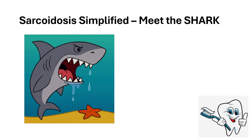Hello everyone, welcome back to our YouTube channel Dental Mnemonics — the channel where learning is always smart and fun. Today we are back with a bang, biting into a high-yield topic from Neville's oral pathology. We'll be discussing sarcoidosis and making it ridiculously easy to remember with a fun mnemonic. As you can see in the figure, there is a violent shark jogging and dripping saliva, hunting for its prey — the starfish. This is not just a weird image; it's your new memory hook for sarcoidosis.